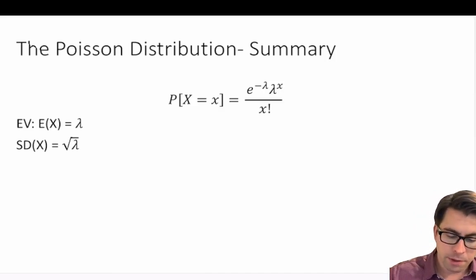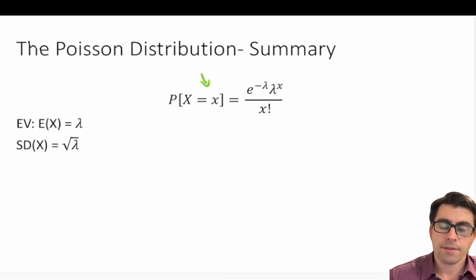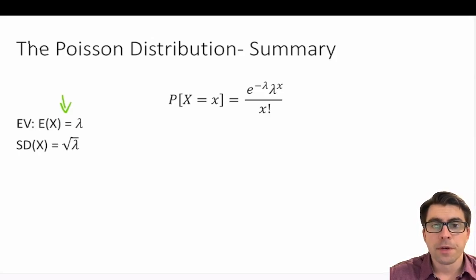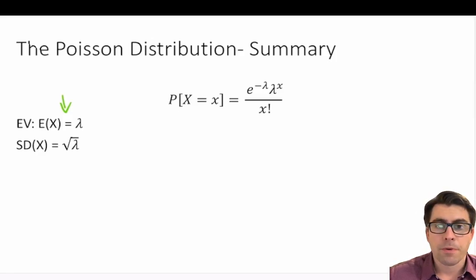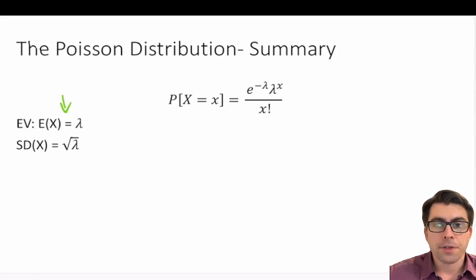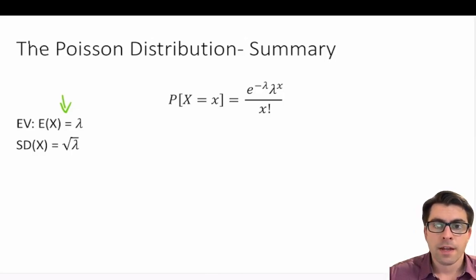The probability model is: P(x = x) = e to the power of negative lambda, times lambda to the power of x, divided by x factorial. Lambda is the Greek letter representing the expected value in our Poisson distribution. You could also use the Greek letter mu, but lambda keeps things tidier. Our standard deviation is equal to the square root of lambda, meaning our variance equals our expected value, and the standard deviation is the square root of that variance.